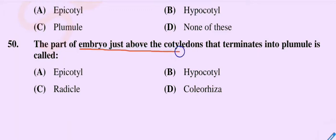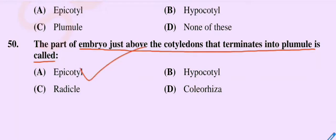Question number 50: The part of the embryo just above the cotyledon that terminates into the plumule is called — option A epicotyl, option B hypocotyl, option C radicle, option D coleoptile. The correct option is option A, epicotyl.